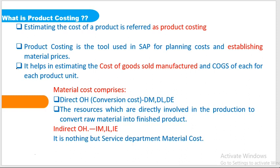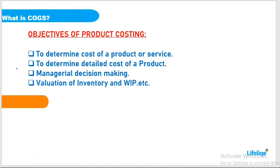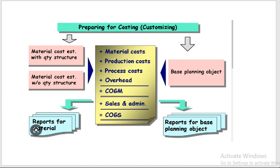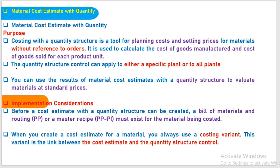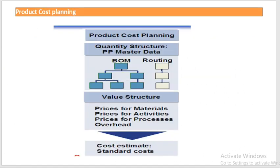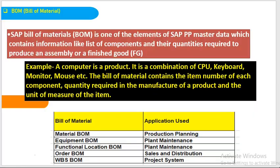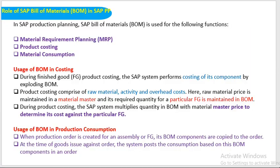In the last videos, I explained what is product costing, the objectives of product costing, how costing happens, what is material cost estimate with quantity structure, how COGM and COGS should be calculated, integration of SAP CO module with other modules, and also the bill of material (BOM) and product costing with planning.